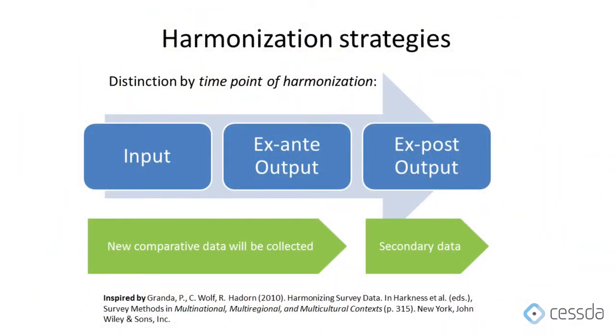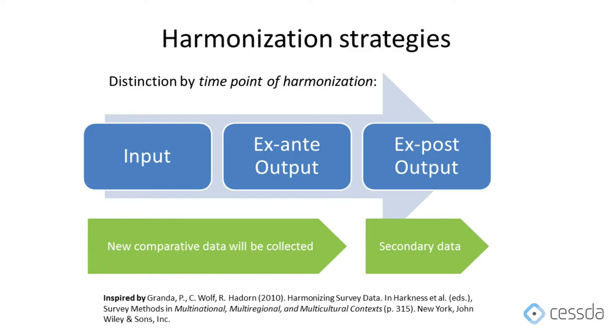Input harmonization is happening before you collect your data. Before you go into the field, you standardize your variables, your questions, your questionnaires, your surveys. So this is ex-ante by definition, as it always happens before. Output harmonization might be planned before, but it's always done after the data collection. If you plan your harmonization before you collect your data, but harmonize it only afterwards, that is called ex-ante output harmonization. But you might also take secondary data and harmonize it to do comparative analysis — this is called ex-post output harmonization, because all of the thinking, planning, and actual work is done after the data has been collected.